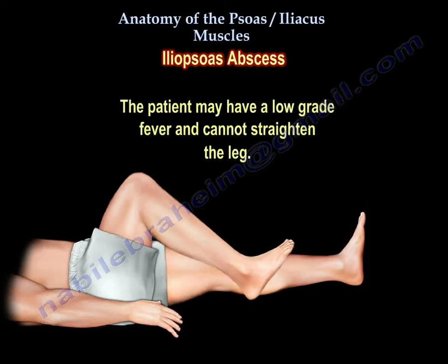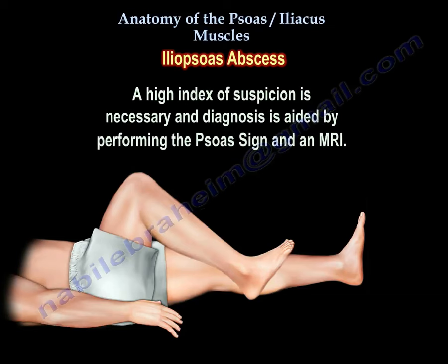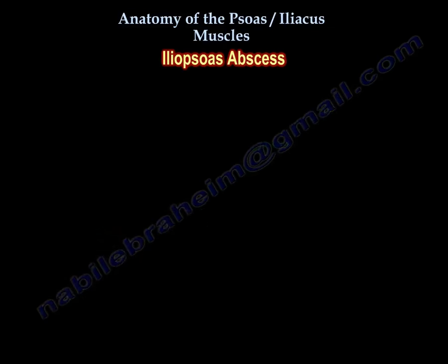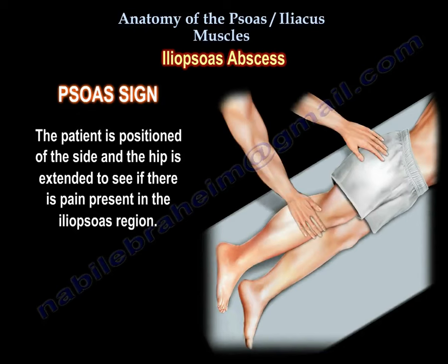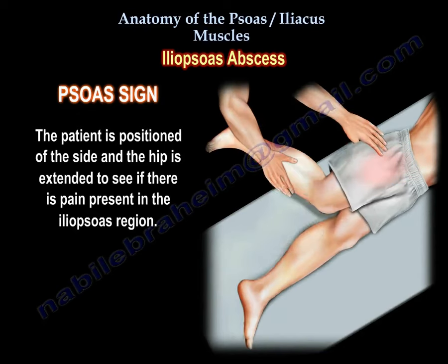The patient may have a low-grade fever and cannot straighten the leg. A high index of suspicion is necessary, and the diagnosis is aided by performing the psoas sign and an MRI. The psoas sign is helpful in diagnosing the psoas abscess: the patient is positioned on the side and the hip is extended to see if there is pain present in the iliopsoas region.